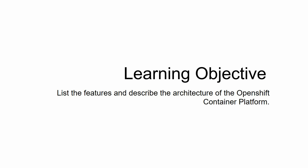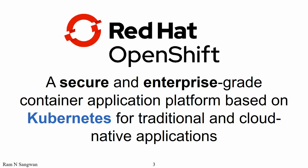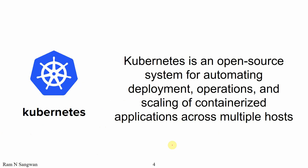The learning objective is to list the features and describe the architecture of OpenShift Container Platform. What is Red Hat OpenShift? It is a secure and enterprise-grade container application platform based on Kubernetes — or K8s — for traditional and cloud-native applications. What is Kubernetes? Kubernetes is an open-source system for automating deployment, operations, and scaling of containerized applications across multiple hosts, in other words, on a cluster.